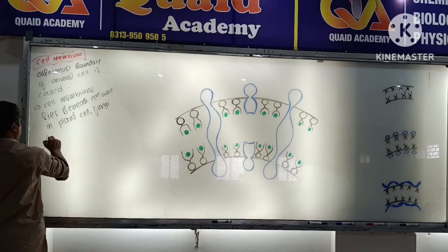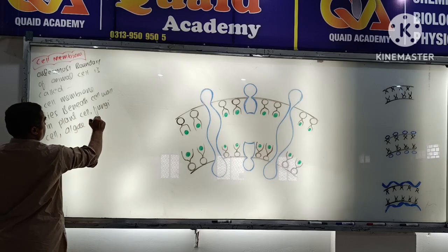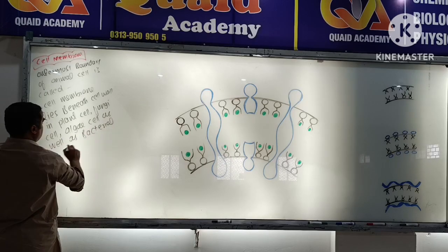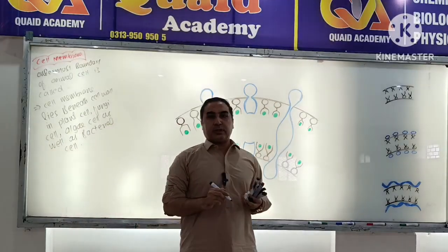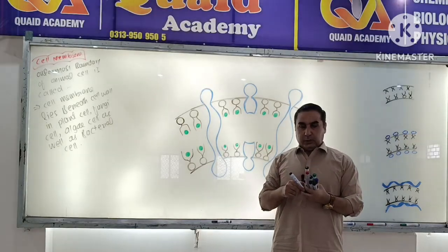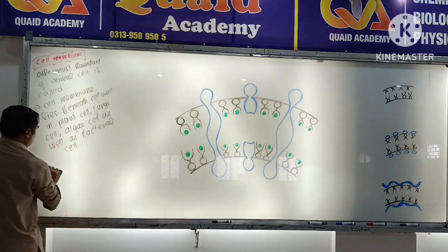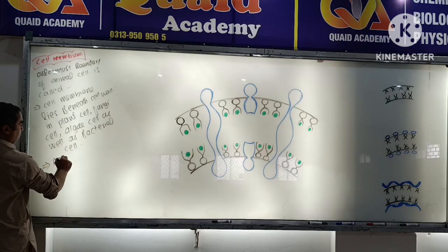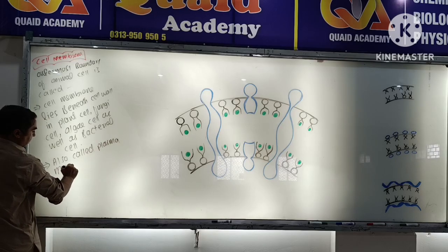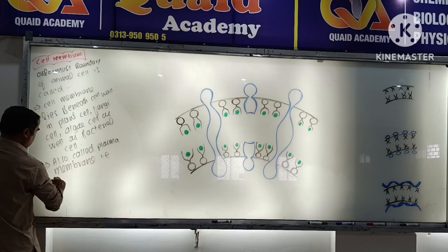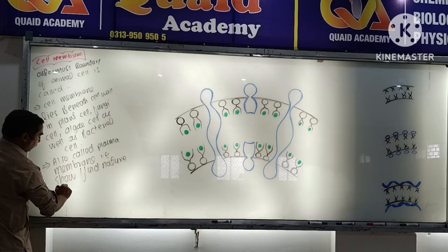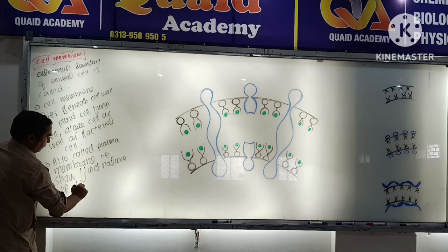In fungi cells as well as bacteria, the cell membrane also lies beneath the cell wall. The cell membrane is also called plasma membrane because it shows fluid nature, or fluidity.